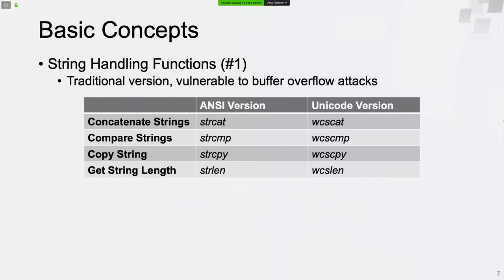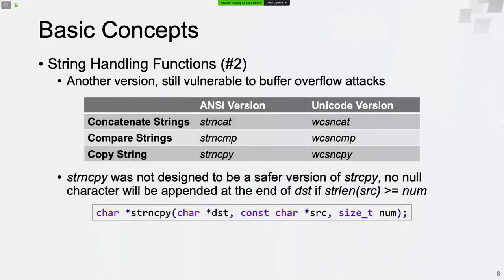Now let's talk about string handling functions. The first is the traditional version — these functions are familiar to all and are known to be vulnerable to buffer overflow attacks. There is another version also vulnerable to buffer overflow. Some people think it is a security-enhanced version, but it is not. For example, strncat was not designed to be a safer version of strcpy. If the source string length equals or exceeds the number of characters to process, no null character will be appended at the end of the destination string.